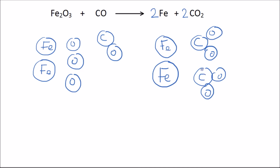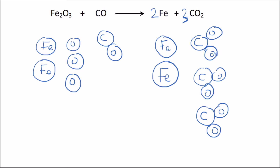So we've balanced the oxygens but the carbons are now unbalanced. We can play around a bit more — instead of multiplying the carbon dioxide by two, we can multiply by three. So we have three carbon dioxide molecules. Now we've got six oxygens on the right, and three carbons on the right — which seems even more unbalanced than before, but there's a reason for that.